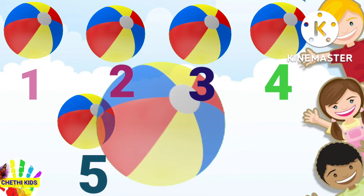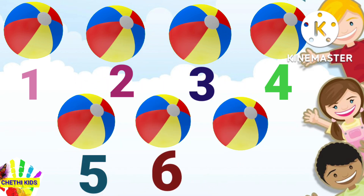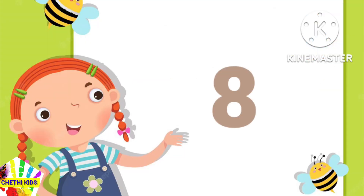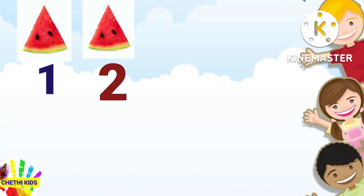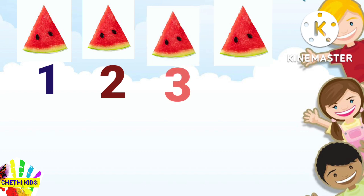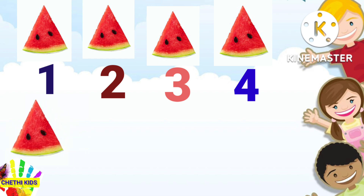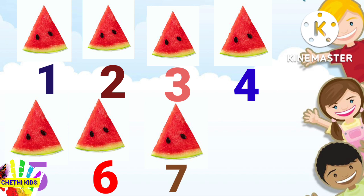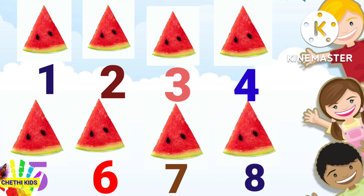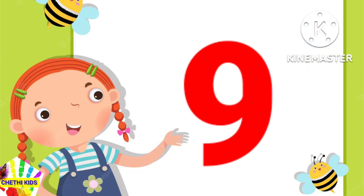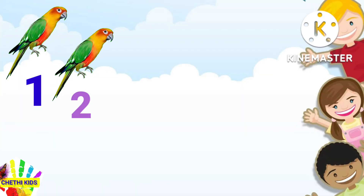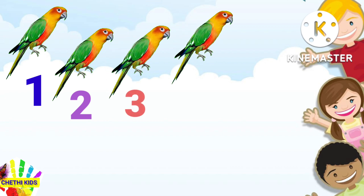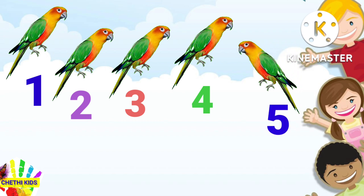Seven. Let's count the objects: one, two, three, four, five, six, seven — seven balls. Eight. Let's count the objects: one, two, three, four, five, six, seven, eight — eight watermelon slices.